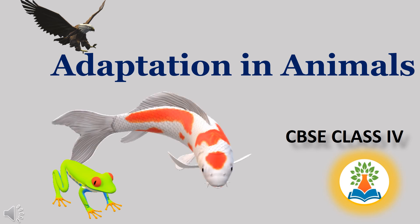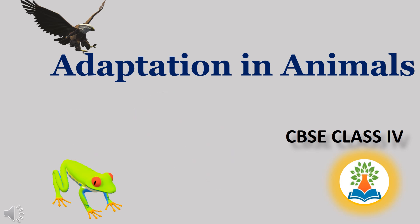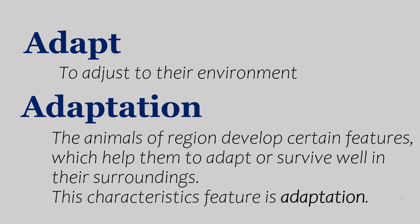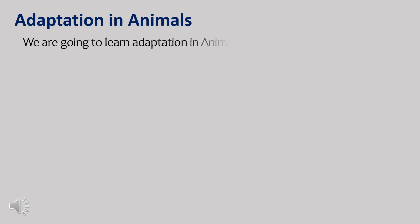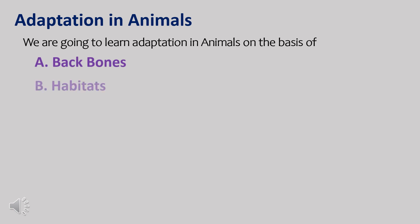Let's get started. We are going to learn adaptation in animals on the basis of: 1. Backbones, 2. Habitats, 3. Type of food they eat.